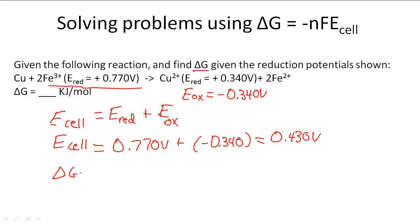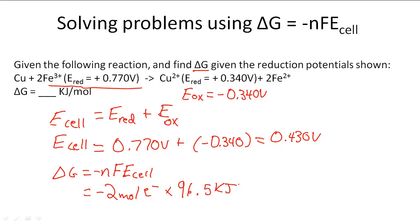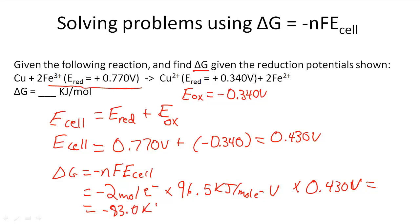Now we can use the free energy equation. There are 2 moles of electrons being transferred, so it's going to be negative 2 moles of electrons times 96.5 kilojoules per mole of electrons per volt, times 0.430 volts. That gives us a Gibbs free energy of negative 83.0 kilojoules per mole.